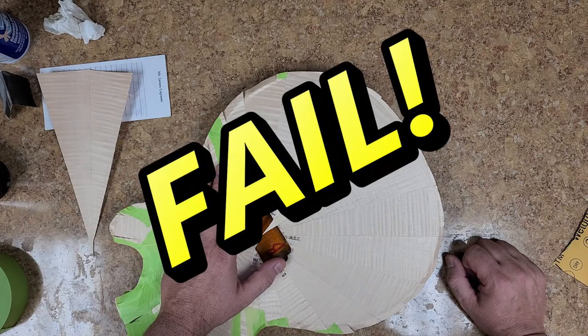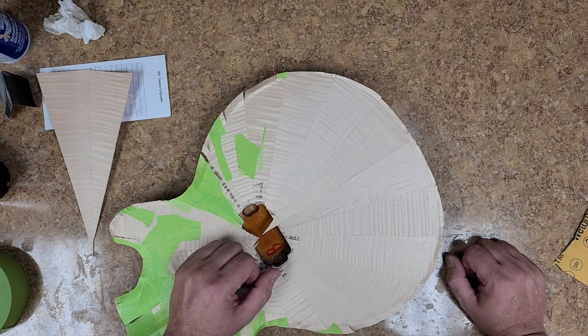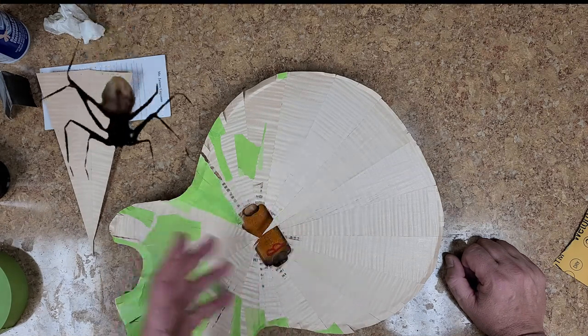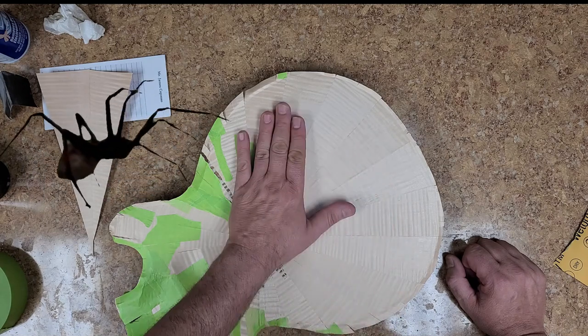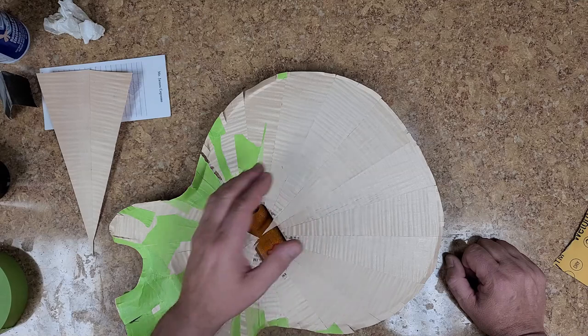So, this ended up being a fail. The Epiphone Special 2 Custom with the spider flame maple veneer top ended up not working out the way that I want it to work. Now, it looks pretty good, okay?